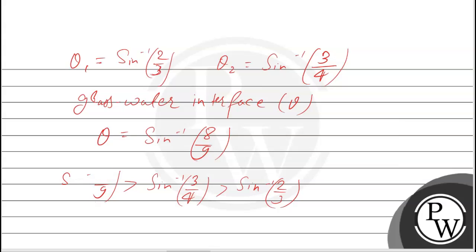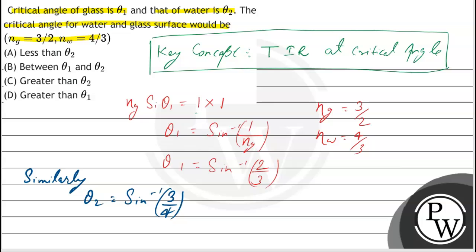The critical angle of the glass-water interface, sin⁻¹(8/9), is greater than both the critical angles theta_1 and theta_2. By mistake I erased this, so again I write sin⁻¹(8/9). This is greater than both critical angles, so option C and option D are correct. I hope you understood it well.